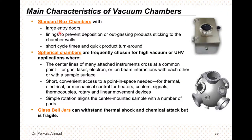The key characteristics of a vacuum chamber are listed as follows. First, we have the standard box chamber. It comes with large entry doors. This box-structure chamber has linings, and the function of the linings is to prevent depositions or outgassing products from sticking to the chamber walls. It also has short cycle times and quick product turnaround.